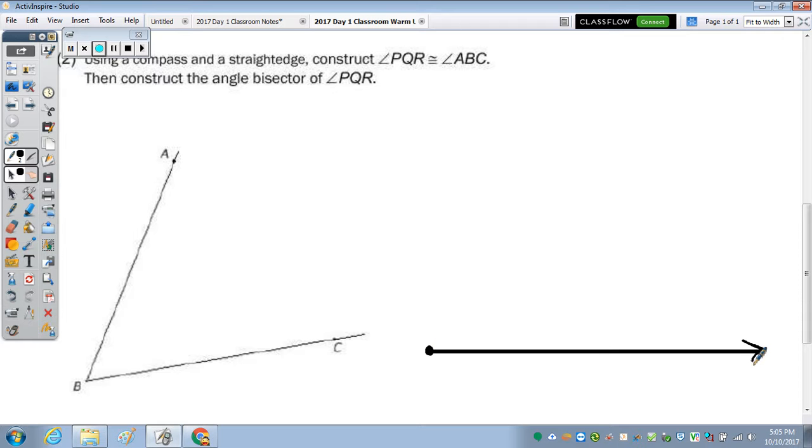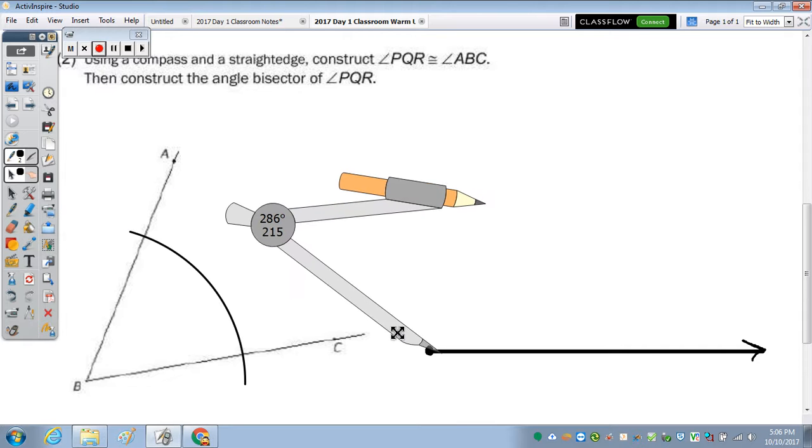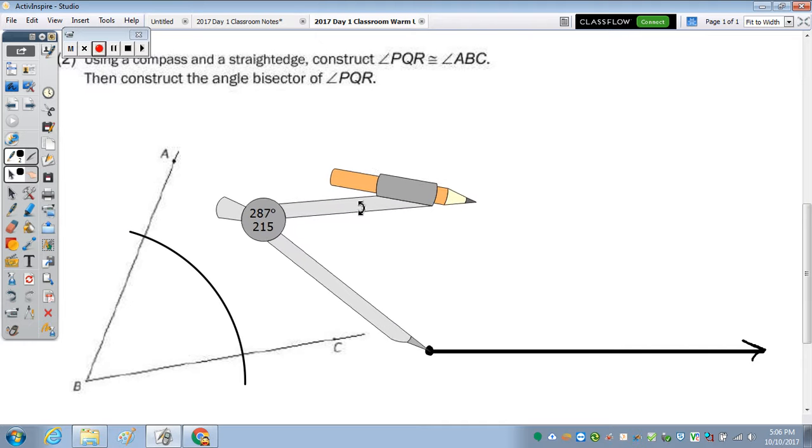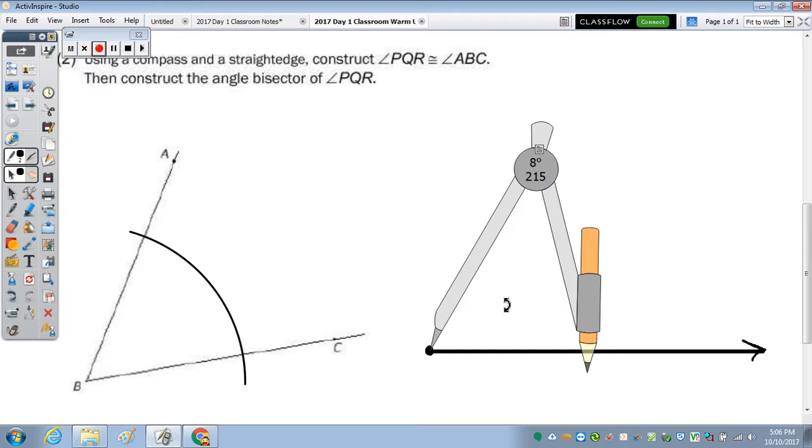So using compass, construct it congruent. So you open up your compass, put the point on your vertex, and draw an arc. With that same radius, we bring it over, and draw another arc.